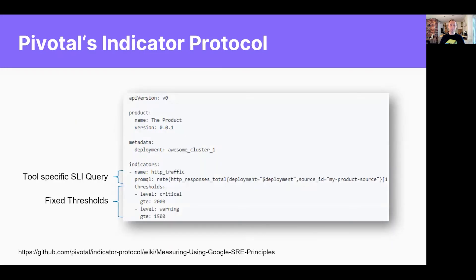Let's go into some examples. Pivotal's indicator protocol — one of the first ones I've seen. Great approach, YAML file. You specify your indicators where in one file you have your SLI with a tool-specific query and your fixed threshold. They're all great, but it's all together in one file and very tool-specific.